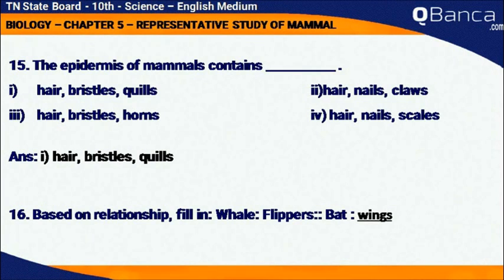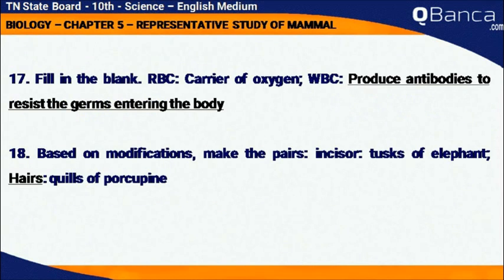Based on the relation, fill in the blank: Whale — Flippers; Bat — Wings. Fill in the blank: RBC — Carrier of oxygen; WBC — Produce antibodies to resist the germs entering the body.